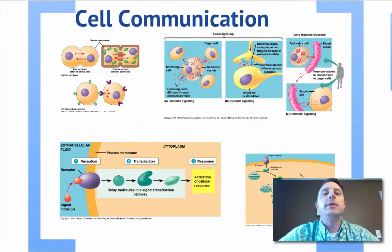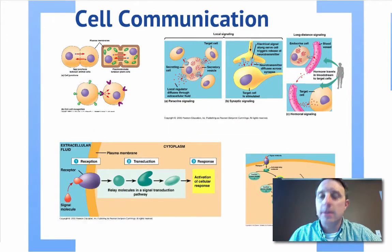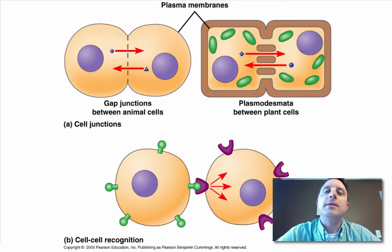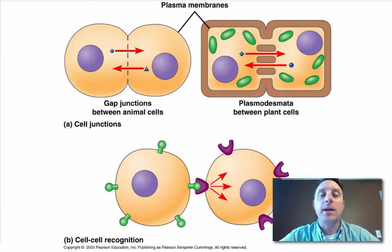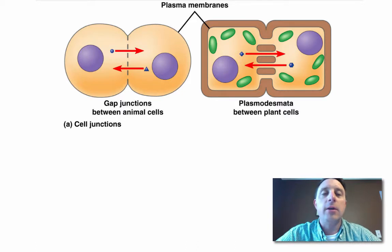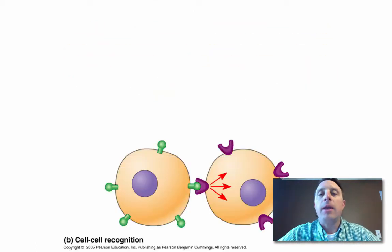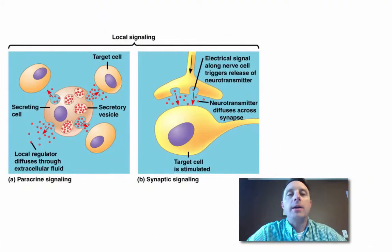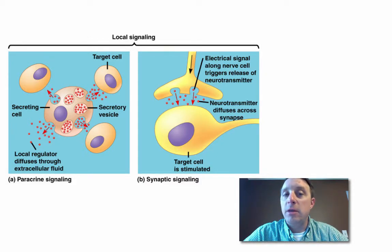First, we started with communication on a cellular basis — the few different ways that cells can communicate with each other. One way is through actual direct contact, whether these cells are in direct physical contact with the gap junctions, as we see in animal cells, or through cell-cell recognition. Cells that are not directly touching each other but are just close to each other can also communicate, and this is known as local signaling.